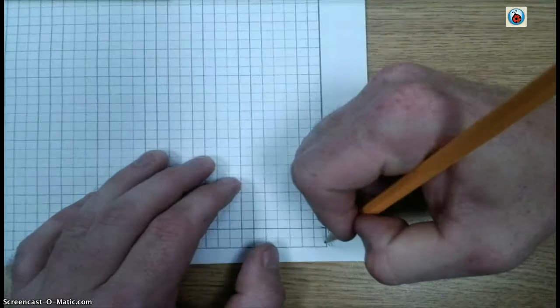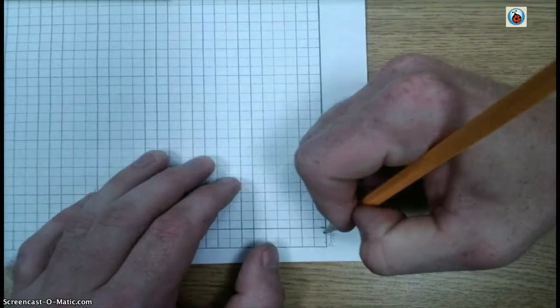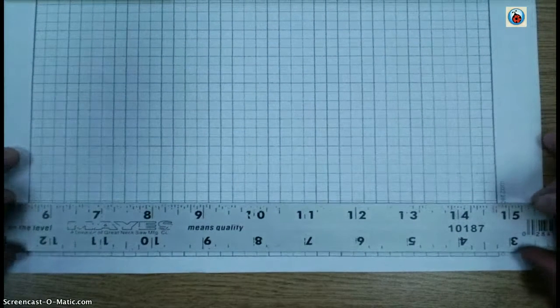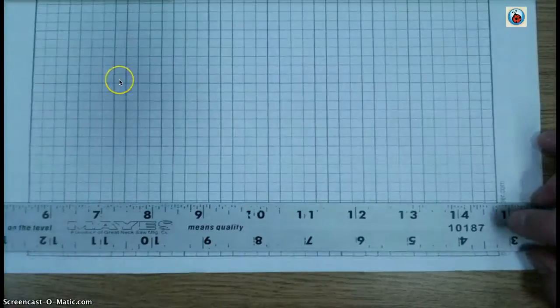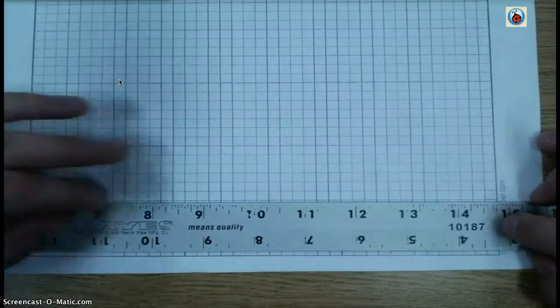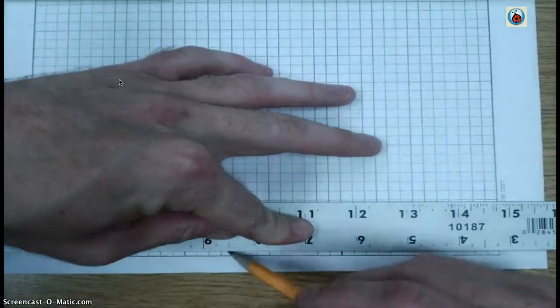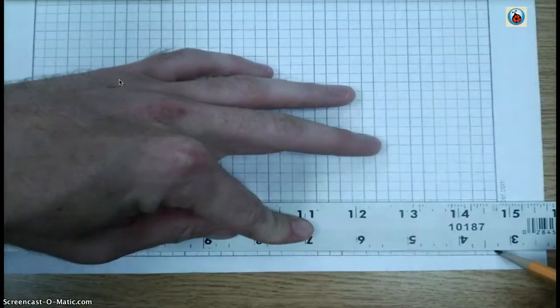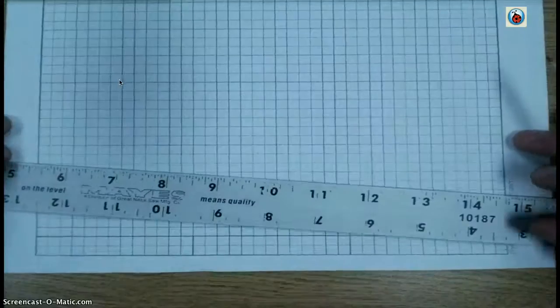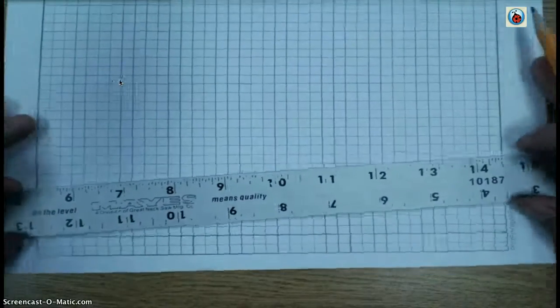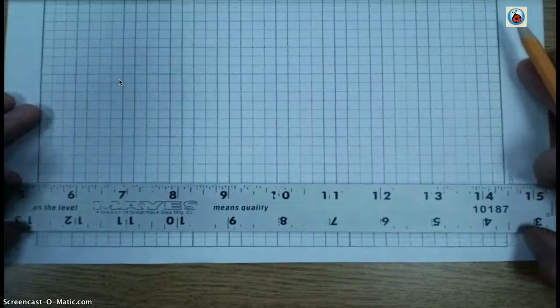Very lightly—we're going to erase this line at the end. Very lightly, connect those dots. You probably can't even see that line on the document camera—I guess barely you can. And do the same thing to the top two dots.